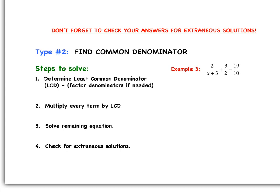Our third example: 2 over x plus 3, plus 3 over 2, equals 19 over 10. First we look at our denominators to figure out the LCD. We go factor by factor: x plus 3 from the first denominator; then the other two denominators are just numbers, 2 and 10. The first number both go into is 10. So the LCD is 10 times x plus 3.